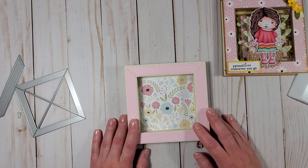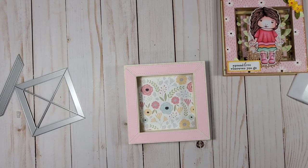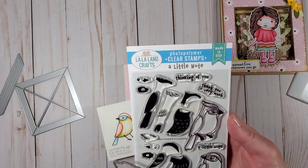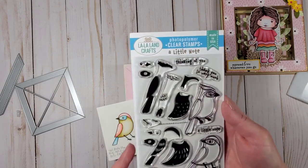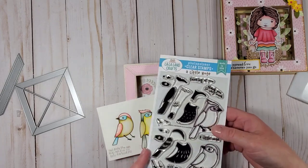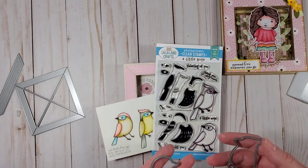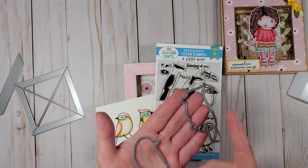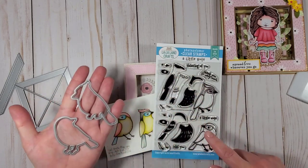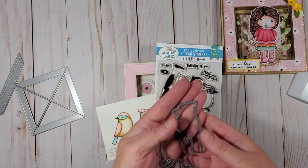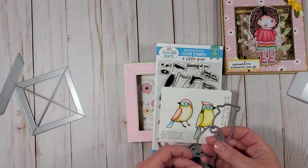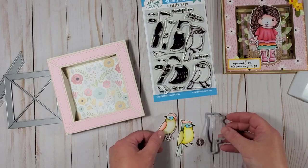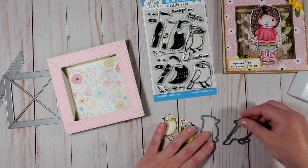For my shadow box today I have a pair of birds. They are from this stamp set which is called A Little Note and it is also one of the new stamp sets by La La Landcrafts. And for the first time La La Landcrafts have the outline dies for this stamp set so it will be very easy to cut the birds out using the dies. Cutting these birds out was really just a matter of seconds. Super fun.